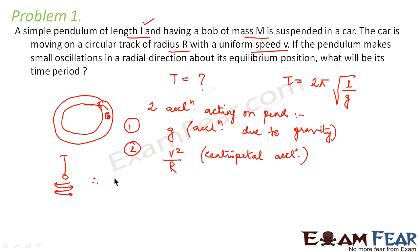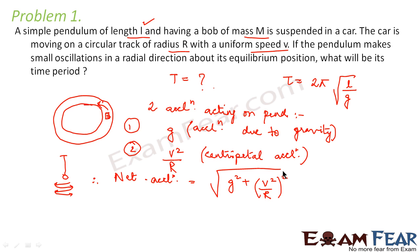So what is the net acceleration? The net acceleration on the pendulum is equal to √(G² + (V²/R)²). This is because the centripetal acceleration acts towards the center of the circular path, whereas the acceleration due to gravity acts vertically downwards — these two directions are mutually perpendicular to each other.